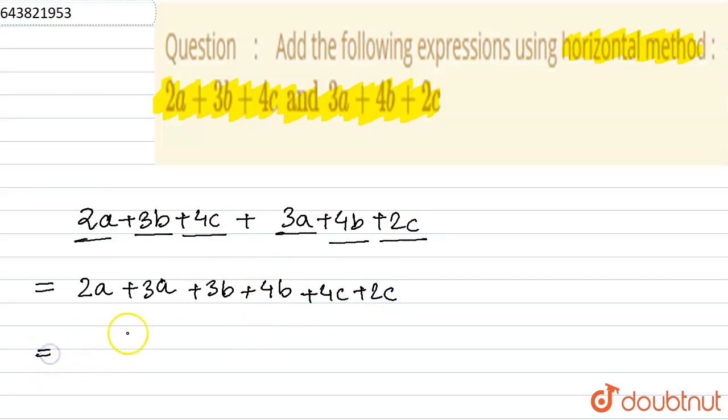So now, 2a plus 3a is 5a. Then 3b plus 4b, the answer is 7b. And 4c plus 2c, the answer is 6c.